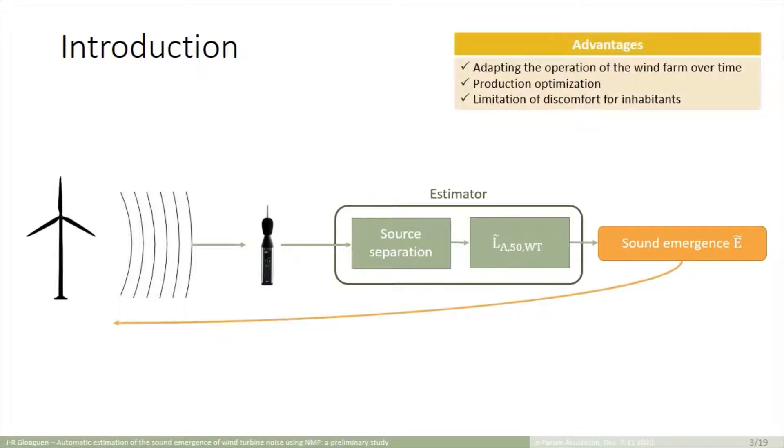With this tool, we will be able to adapt the curtailment plant continuously and then to optimize the operation of the wind turbine over time. And to perform this source separation, we are using the non-negative matrix factorization.